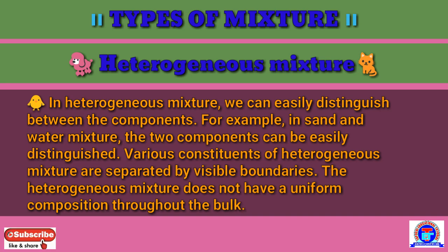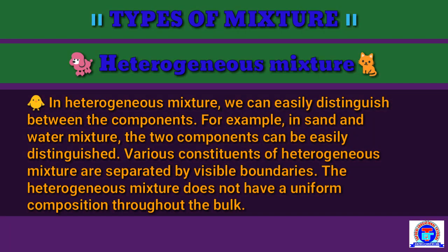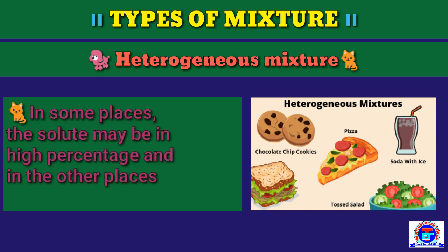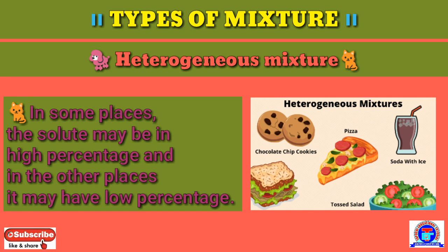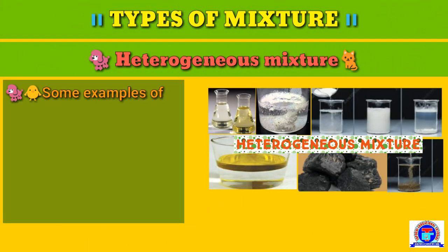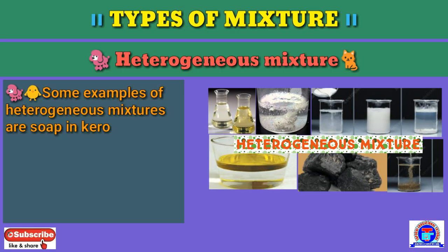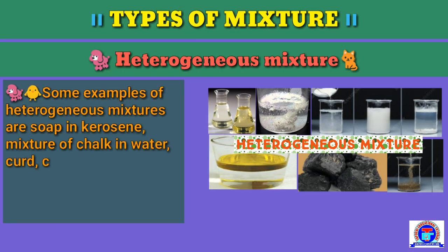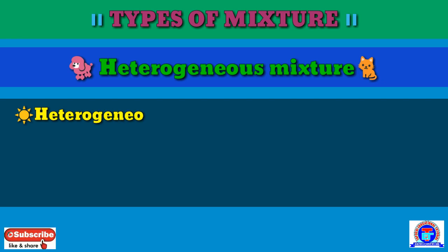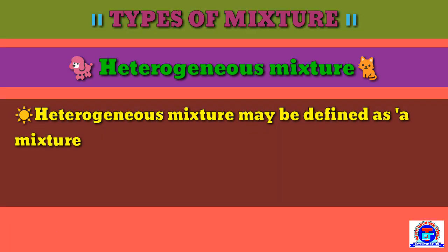The heterogeneous mixture does not have a uniform composition throughout the bulk. In some places the solute may be present in high percentage and in other places in low percentage. Examples of heterogeneous mixtures are: soil in kerosene, mixture of chalk in water, curd, coal, lime in water, slate in water, petrol in water, flour in water, and milk of magnesia. A heterogeneous mixture may be defined as a mixture in which substances are not uniformly mixed with one another and have a boundary of separation.